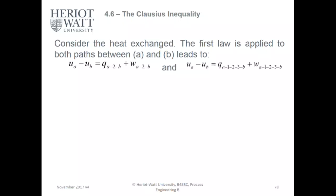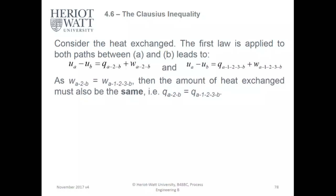Consider the heat exchanged. The first law is applied to both paths between A and B, leading to UA minus UB equals QA to B plus the work input of A to B, and UA minus UB equals QA1 to 3B plus the work 1 to 3B. As the work A to B equals work A1 to 3B, it's just a different process path.